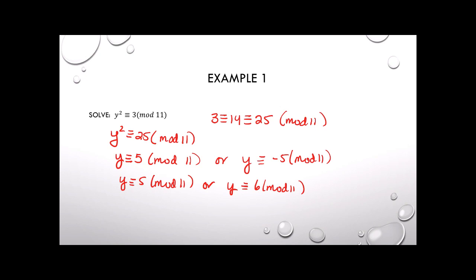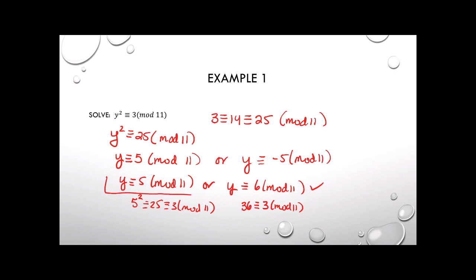You can always check your work. If we take 5 and square it, we get 25, and reduced mod 11, it is congruent to 3. If we take 6 and square it, we get 36, and 11 goes into 33, so that's also congruent to 3 mod 11. Both answers check out.